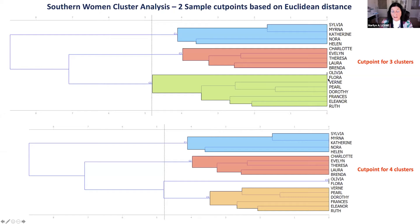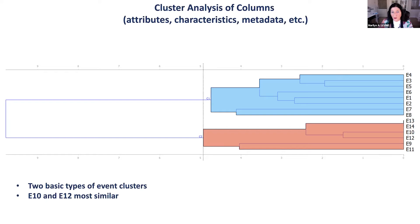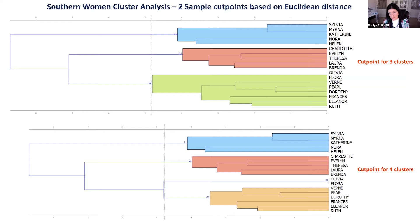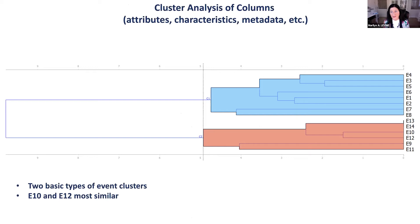Here is an example of the southern women dataset with three clusters — you can see Olivia and Flora connecting. I personally prefer four clusters, but three is acceptable. An article analyzes 21 different analyses of that southern women dataset to determine the best algorithms. This is also a cluster analysis of columns — the events or attributes — not just rows (people). In Orange, you can cluster both rows and attributes. For example, events E10 and E12 cluster very close together.